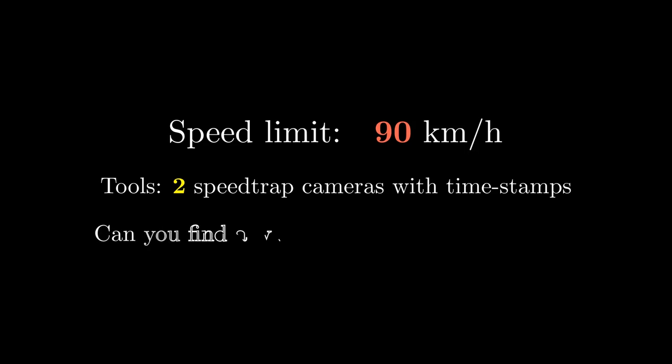Suppose the speed limit on a highway is 90 kilometers per hour. You have two speed trap cameras which can record the times at which the car passes the speed traps. Can you use these speed traps to find a way to catch speeding drivers?